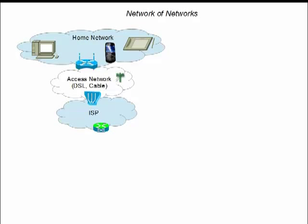Access networks such as DSL or cable connect into an Internet service provider. The access networks vary in capability and reliability and the way they operate, but to the home network user many of those differences are hidden. The technology is hidden because the boundaries between these three different networks — the home network, the access network, and the ISP — are all bridged by IP, the Internet Protocol. So if you are looking from inside the home network, you cannot really tell that you are operating on one network versus another.